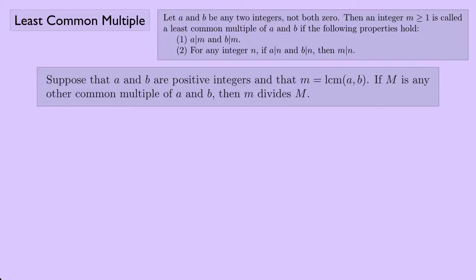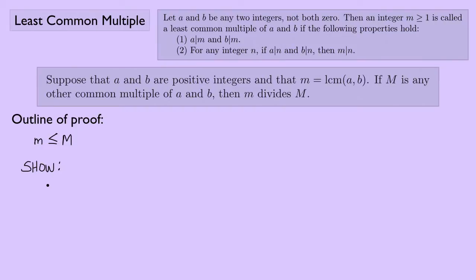Let's look at something we can prove using this definition of least common multiple. Suppose a and b are positive integers and that lowercase m equals the least common multiple of a and b. Then, if uppercase M is any other common multiple of a and b, then lowercase m divides uppercase M. Let's look at an outline of this proof. First, I note that lowercase m must be less than or equal to uppercase M, because m is the least common multiple. And what I need to show is that lowercase m divides uppercase M.